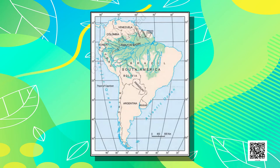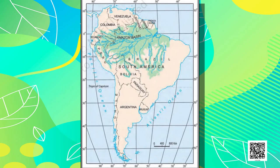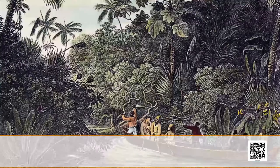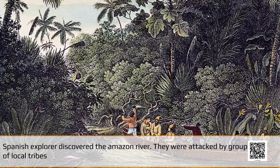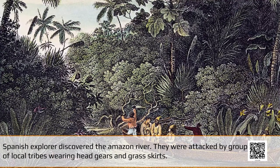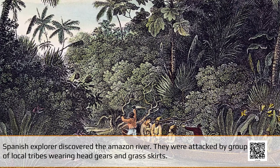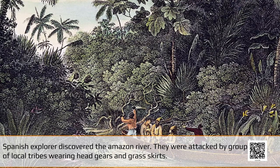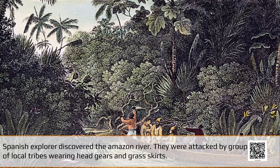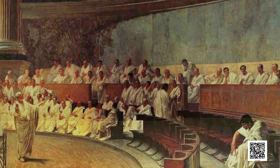Before learning about the Amazon Basin, let us look at this map. Notice that the Tropical Region lies very close to the equator, between 10 degree north and 10 degree south, so it is referred to as the Equatorial Region. The River Amazon flows through this region. When Spanish explorers discovered the Amazon River, they were attacked by a group of local tribes wearing headgears and grass skirts.